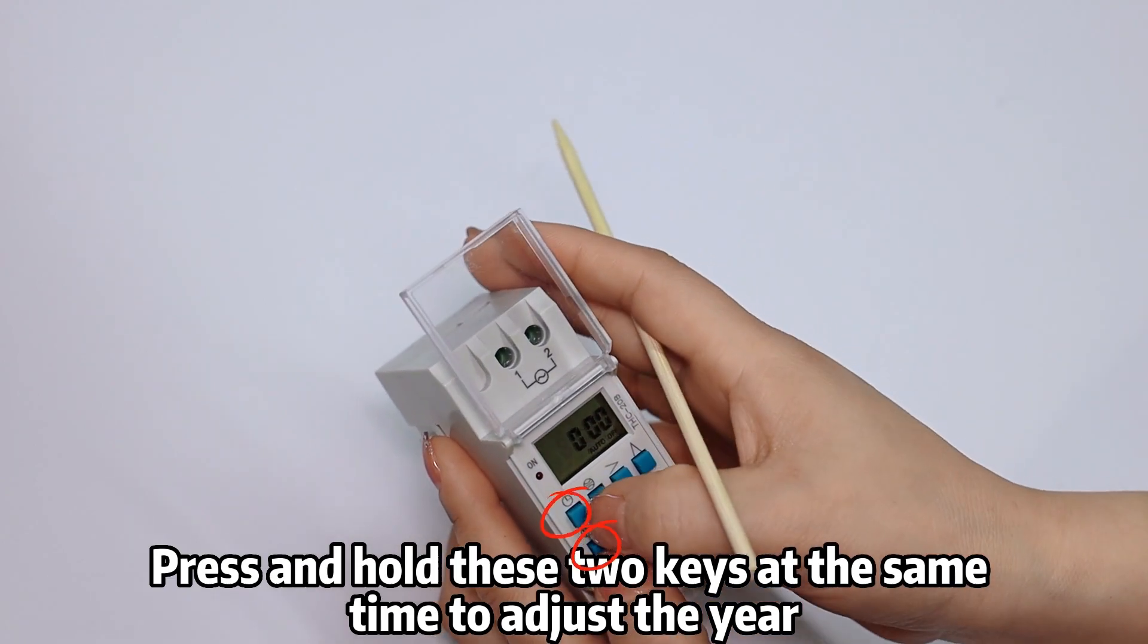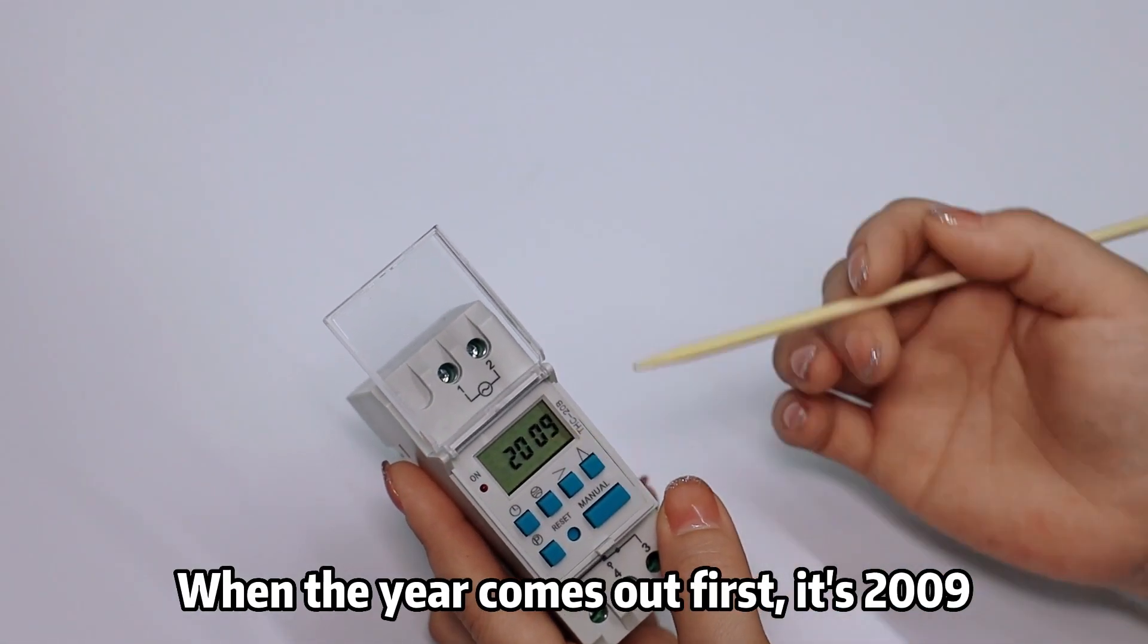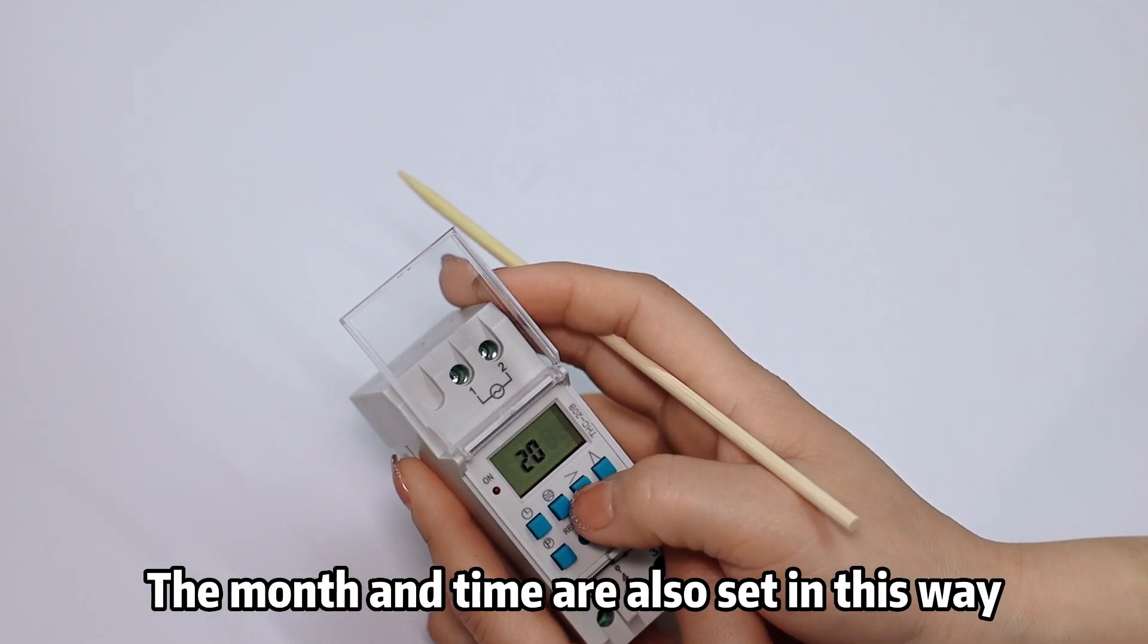The next step is to set the year. Press and hold these two keys at the same time to adjust the year. When the year comes out, it shows 2009 first. You can then set the year. The month and time are also set in this way.